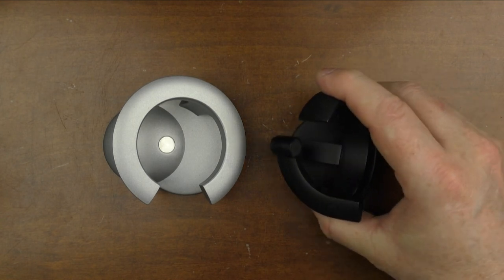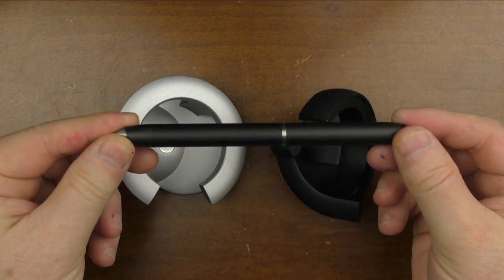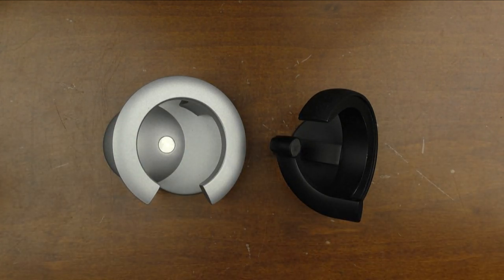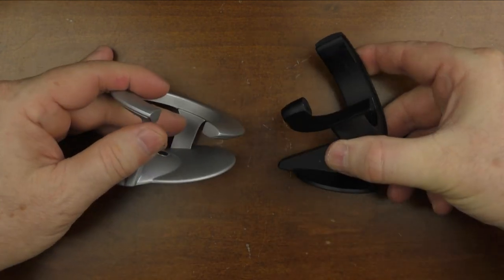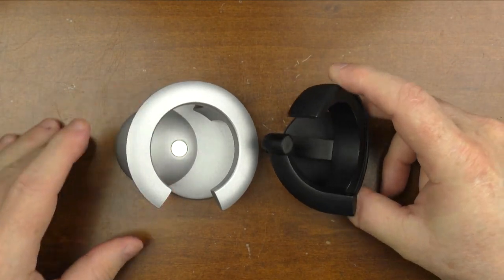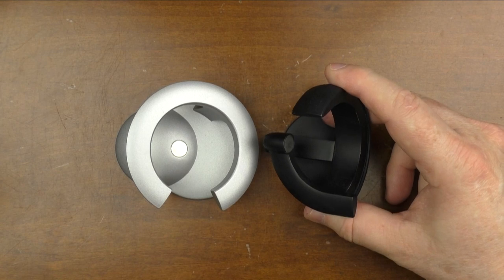We have the base and then we have the pen. Let's take a look at the base first. In comparison, you can see what it looks like in comparison to the 2.0. You can see that the magnetic portion on the 2.0 was at the bottom of the stand.